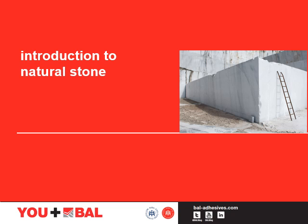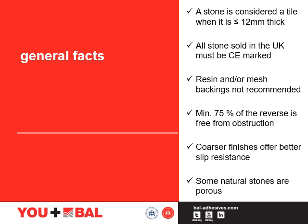An introduction to natural stone. A stone is considered a tile when it is less than 12mm thick and it has no edge length greater than 610mm on any side. Anything above this, we consider it a slab.